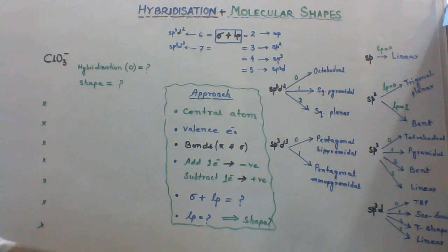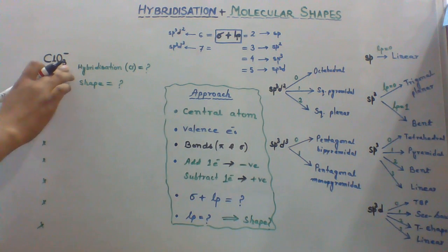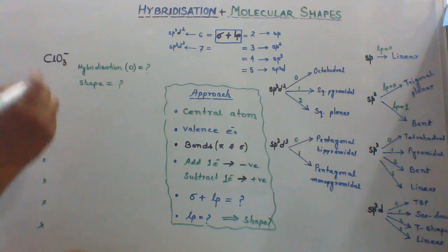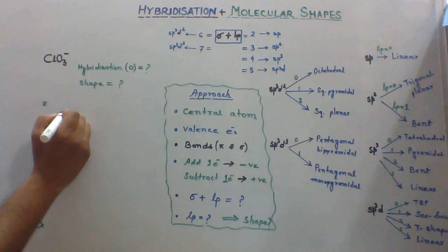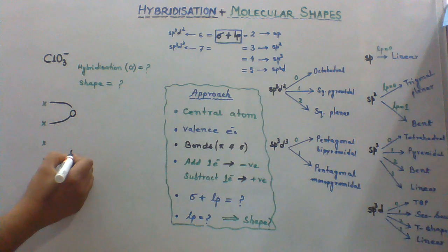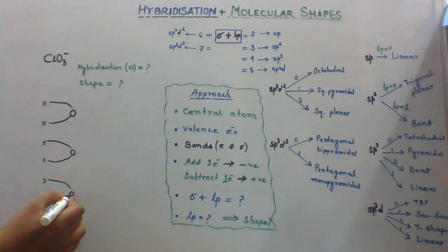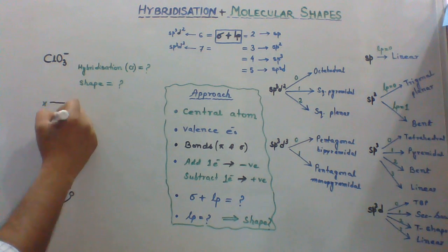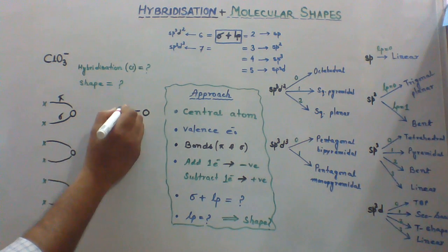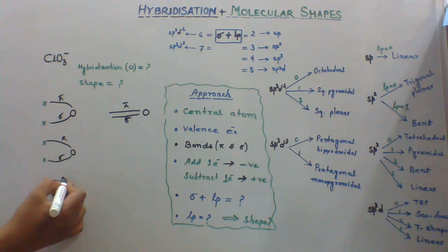Then we have to form bonds, sigma or pi, with the surrounding atoms. The surrounding atoms in the species are 3 oxygen atoms. So valence of oxygen atom is 2, so each oxygen atom will form 2 bonds. And here it will form 1 pi, 1 sigma. We know that double bonded oxygen forms 1 pi and 1 sigma.